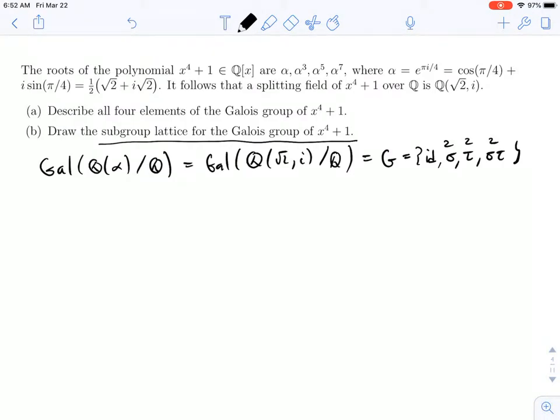And we want to draw the subgroup lattice. So the easy ones to draw are: top of the lattice, you have G, and the bottom of the lattice, you have the group generated by the identity, which just has one element.